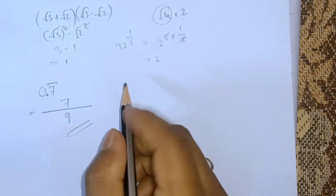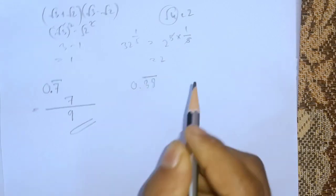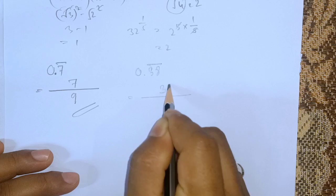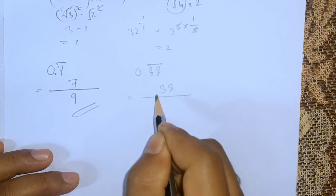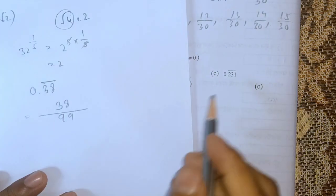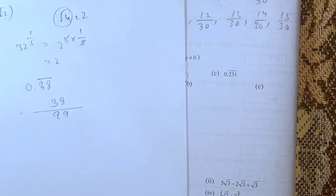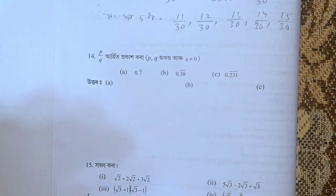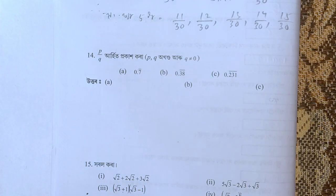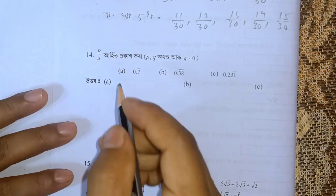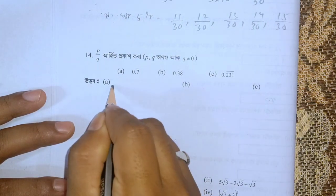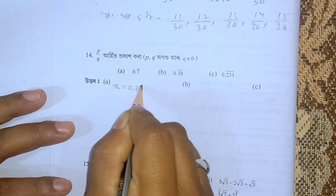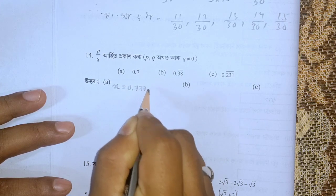So here we have 0.312, then the direct data is 38 and now the direct data is higher. The direct data is higher. I will try to figure out how to make the direct data. x is equal to 0.7, so repeat 777...